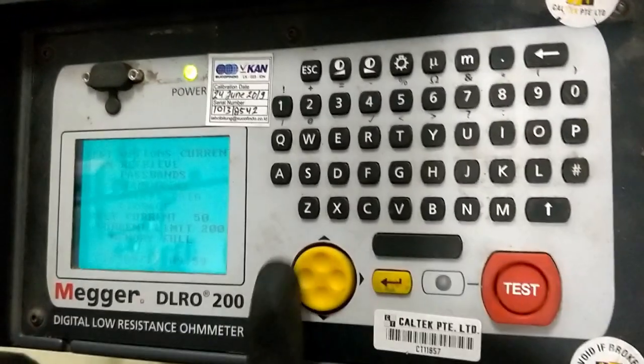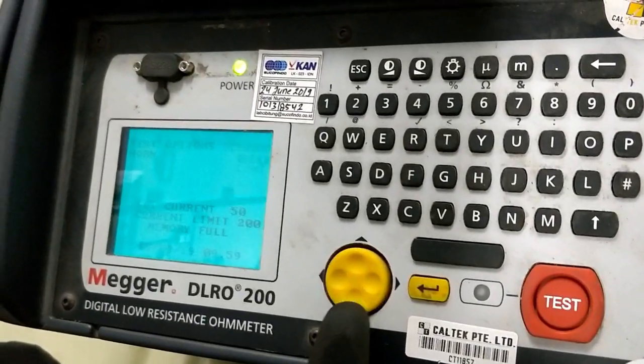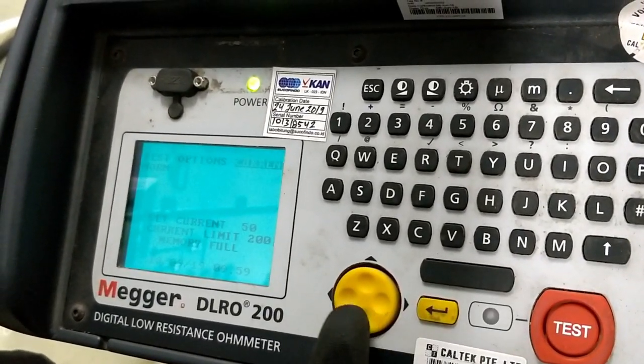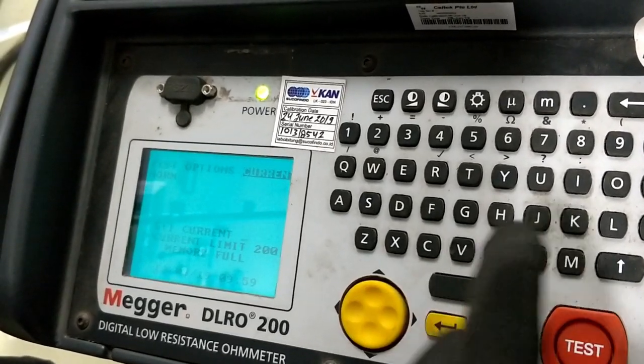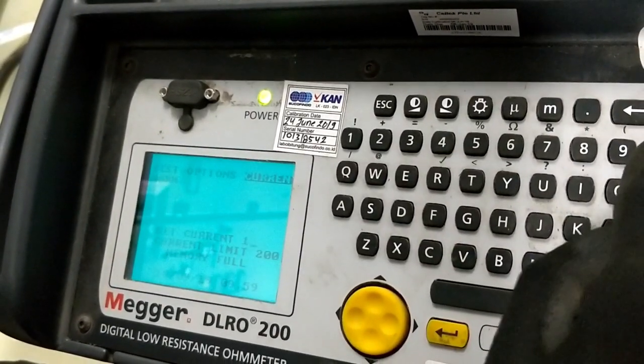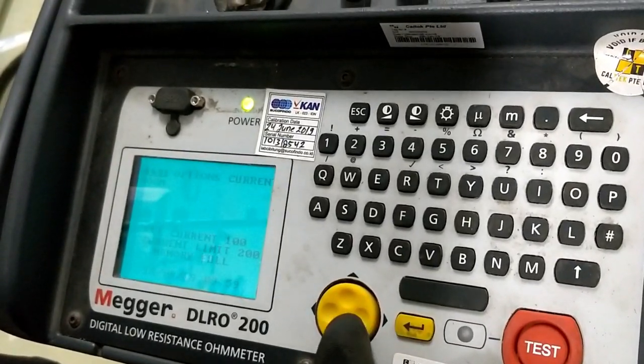Now I am making the current value as 100. After setting the current value to 100 I start injecting the current and our kit is going to calculate the value.